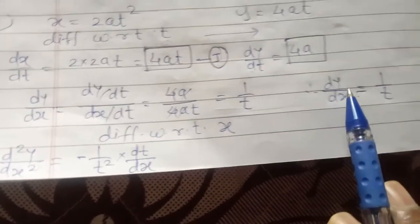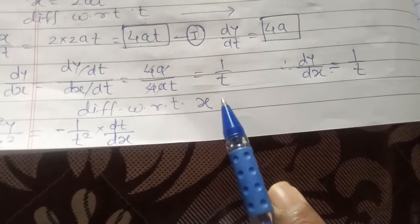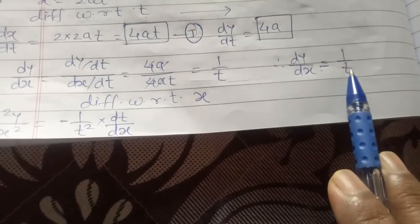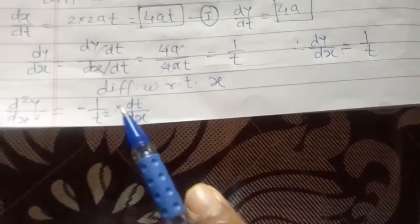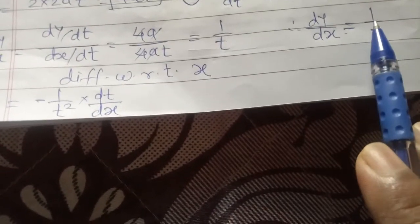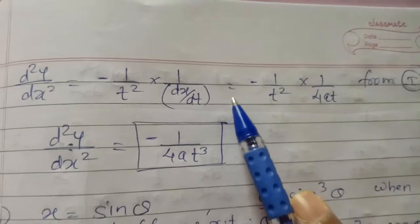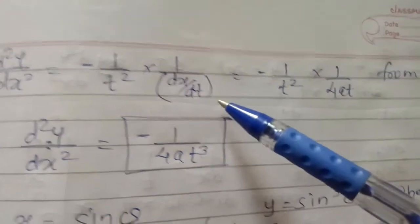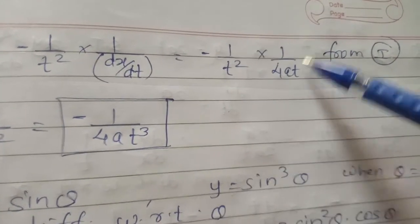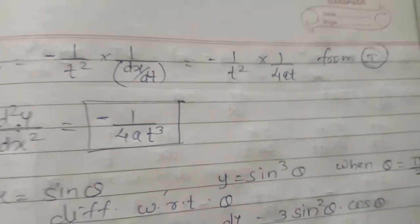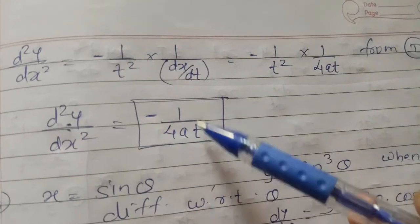Again differentiating with respect to x: d²y/dx² equals the derivative of 1/t, which is minus 1/t² into dt/dx. Writing dt/dx as 1 upon dx/dt, and the value of dx/dt is 4at, we get d²y/dx² equals minus 1/t² into 1/(4at). Therefore d²y/dx² equals minus 1/(4at³).